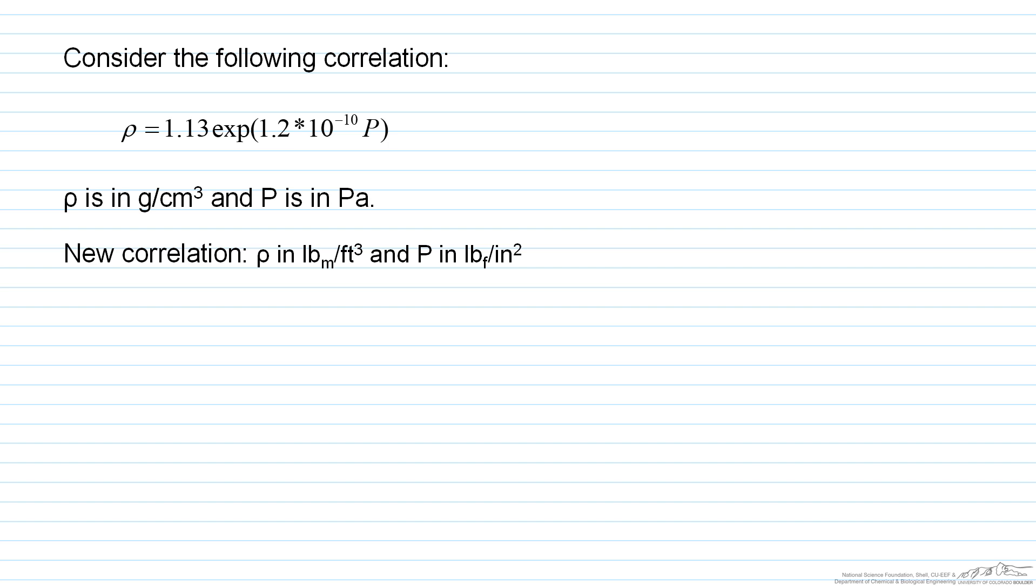A lot of times in engineering and the sciences you find yourself with some sort of mathematical correlation and it's not in the units that you want to work with. So we have an example here where we have a correlation for the density of some gas in grams per cubic centimeter as a function of the pressure in Pascals. And we want to create from this a new correlation for density in pound mass per cubic foot and pressure in psi or pound force per square inch. So that's what we're going to do in this screencast.